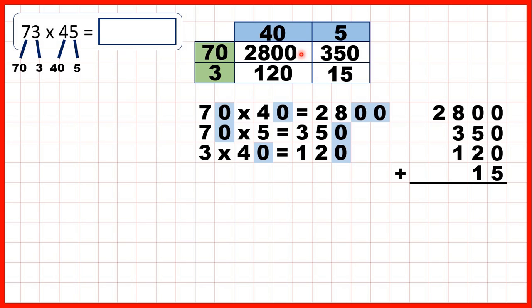Now we just add up the numbers that are on the grid. And when we do that, we get our answer, 3,285.